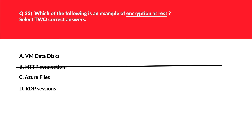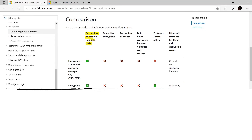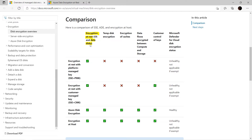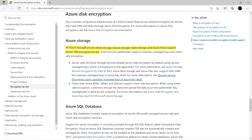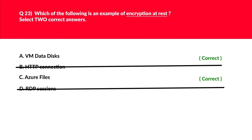Let's look at option C, that is Azure Files. Azure Files supports server-side encryption at rest. This seems another valid answer — it looks like we got our two answers. Let's still look at option D, that is RDP sessions. Data in transit over the network in an RDP session is protected by TLS. This seems incorrect — we'll reject this. Looking at the official documentation, encryption at rest covers the data disk as one option, and for the second option, all Azure storage services are supported — blob storage, queue storage, table storage, as well as Azure Files — which support server-side encryption at rest. We got our answer and we'll log this.